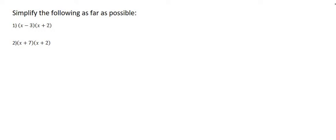Here we have two questions where we are going to multiply the two brackets together. In each of these brackets, there are two terms. So we call that a binomial. Bi meaning two, like a bicycle. It's got two wheels.